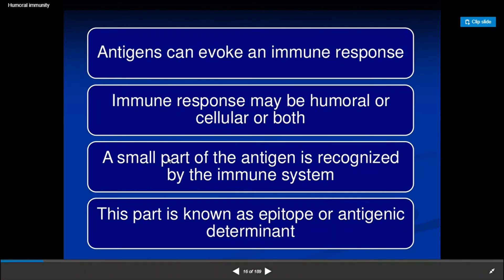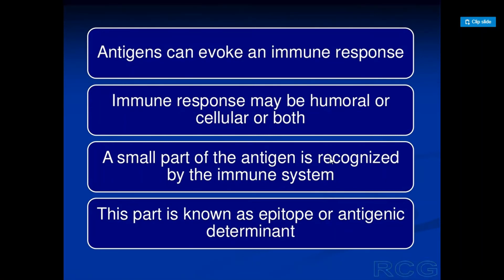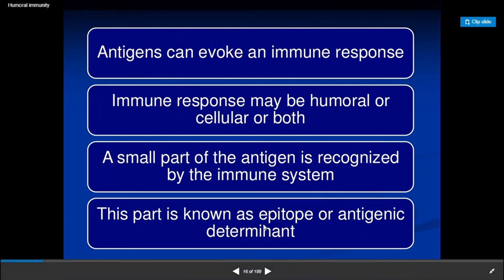A small part of the antigen that is recognized by the immune system is known as an epitope. These are the epitopes of the antigens, also called antigenic determinant sites — the specific sites recognized by our immune cells and immune system.